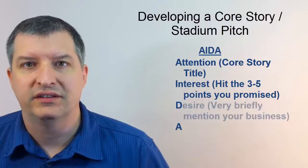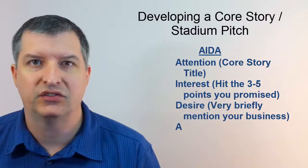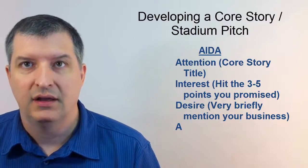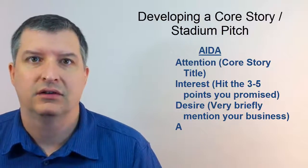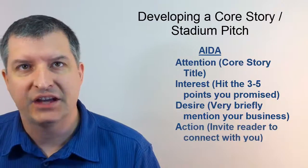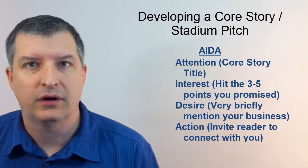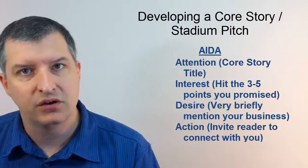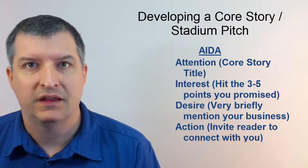The next letter is D for Desire. By now you've done a good job with your core story and the client already has some kind of desire — they just don't know what to do with it. You want to briefly mention that this material is provided by the experts at your business, but don't talk too much about your business. Let the material in the attention and interest sections convince the reader of your expertise. Finally, in the Action section, invite the reader to connect with you — at your storefront, by appointment, or however it is that you do business. Make the call to action brief and clear. Again, don't talk about your business too much. This is not a hard sell — you're educating your people. Let the above sections convince them that they need to meet with you.